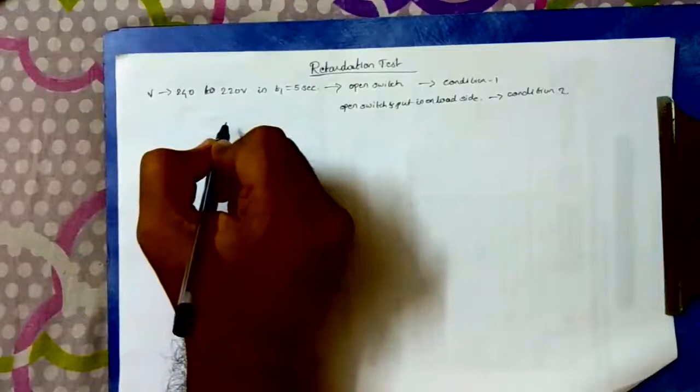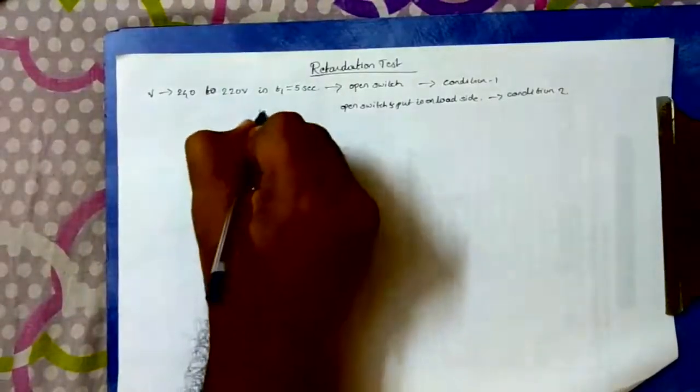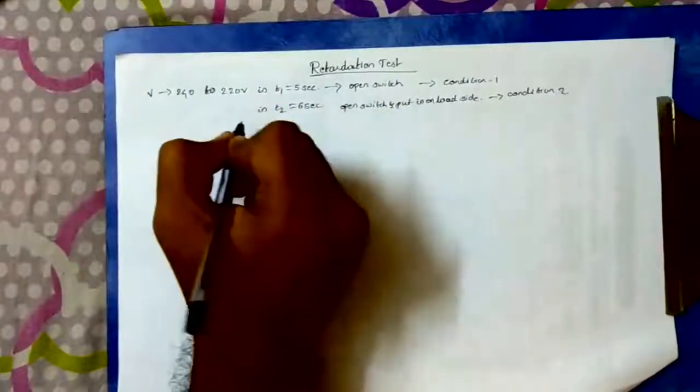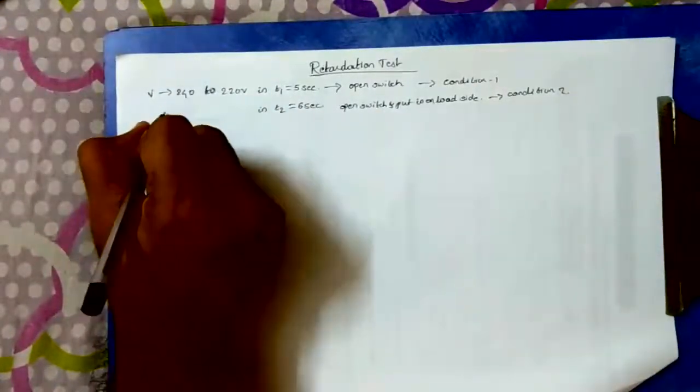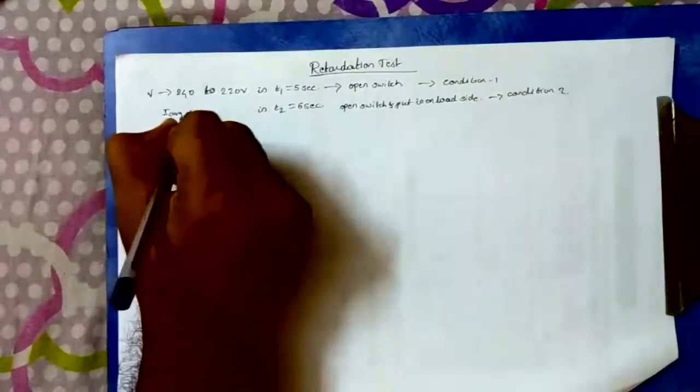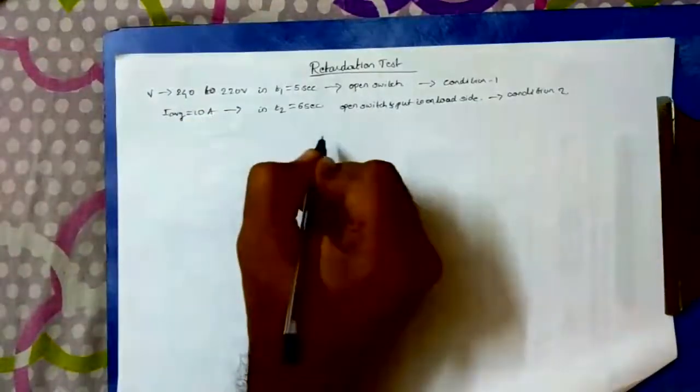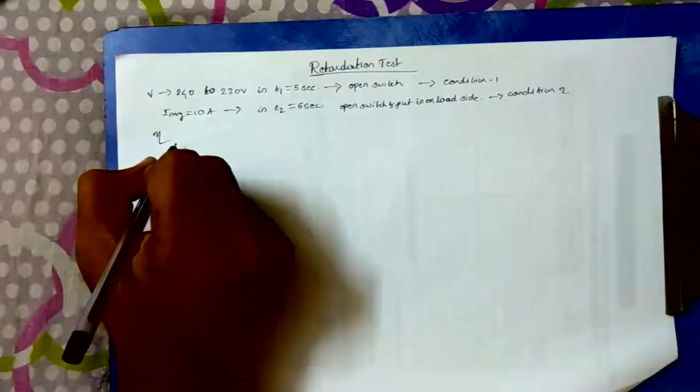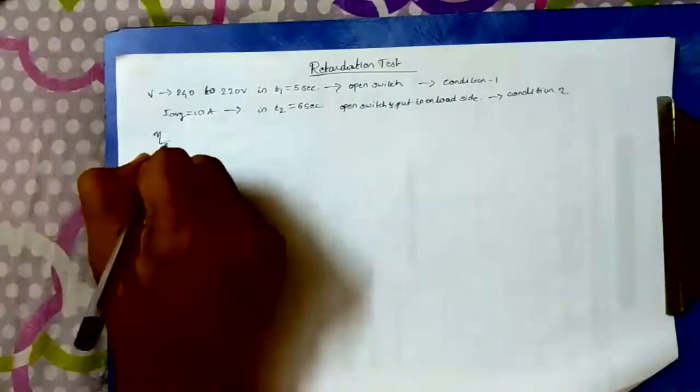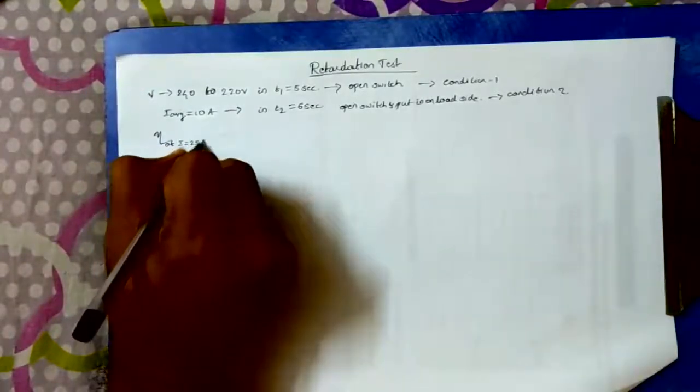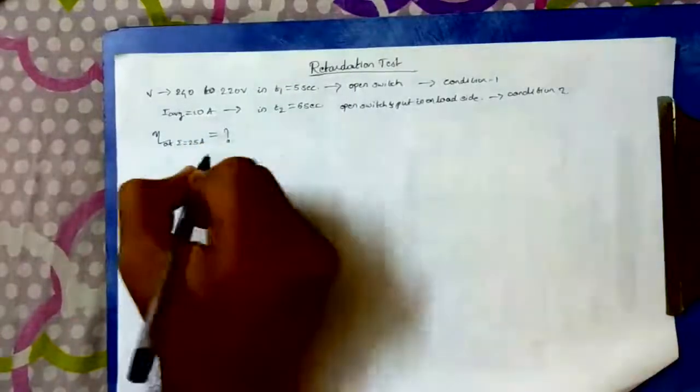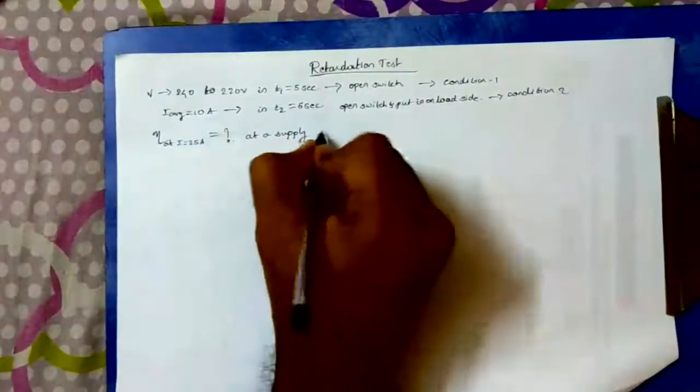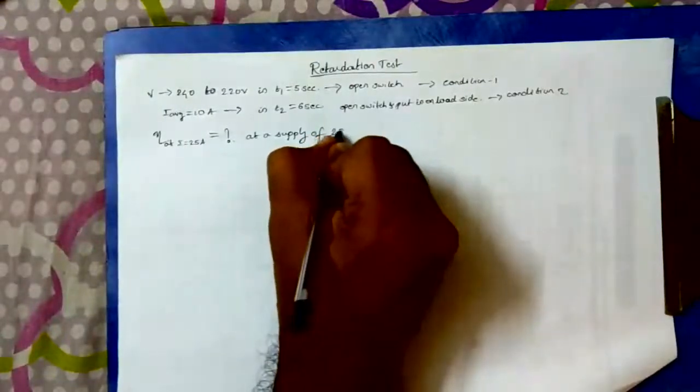So here what data we have is time is given T2 as 6 seconds, whereas with respect to that we have average current given as I average of 10 ampere at T2 of 6 seconds. Now the question is find the efficiency of the machine when running as a motor that takes a current of 25 ampere at I equal to 25 ampere.